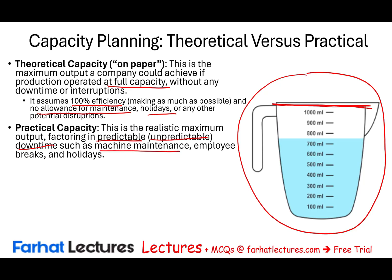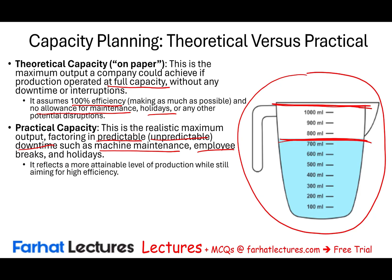Practical capacity is a realistic maximum output factoring in predictable downtime or issues — such as machine maintenance, machine breakdown, machine setup, employee breaks, and holidays. So practical capacity for my son may be 750 milliliters, the attainable level of production while still aiming at high efficiency given his age, strength, and so on.